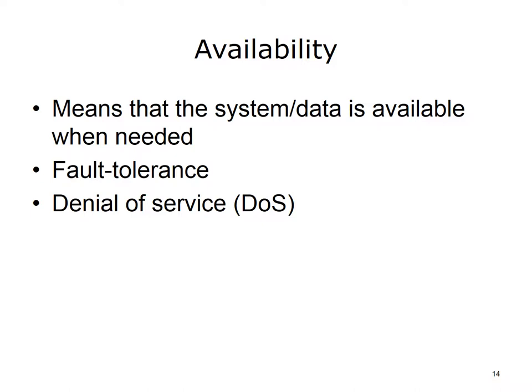Availability means that the system or data is available when needed. If someone defaces a website, that website is no longer available. While a user could still access the page, the page's integrity has been compromised and the information they want to receive is no longer available. Availability is important in patient care — for example, if a patient comes into the ER, it is important that the physician can quickly obtain medical records. One thing that helps ensure availability is to create fault-tolerant systems. Fault-tolerant computer systems have redundant components such as fans, processors, or RAID — redundant array of inexpensive disks. If one component fails, the other remains so the system doesn't stop working.